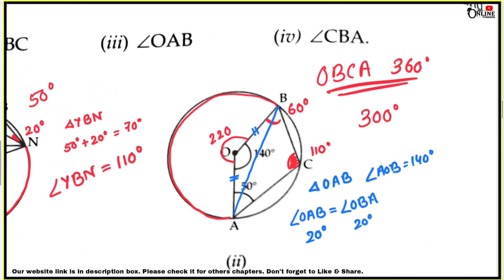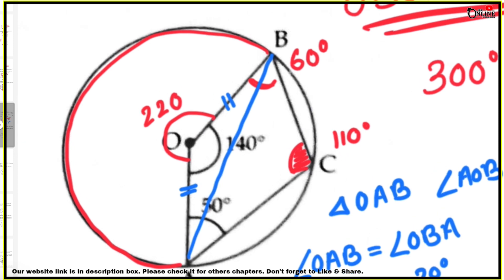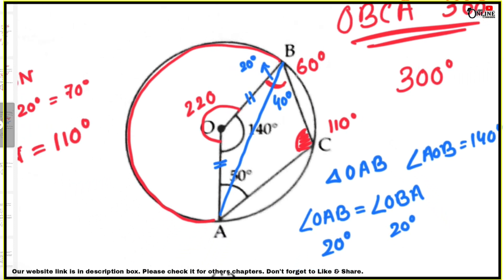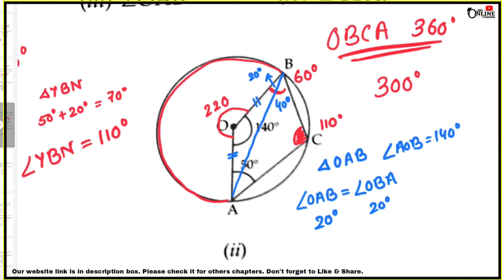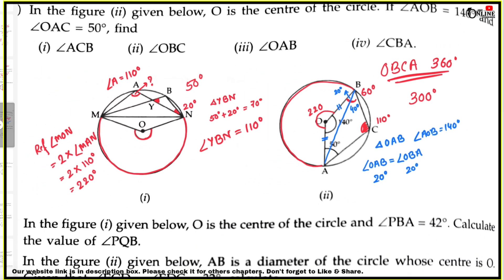The angle at B was 60 degrees. The portion OAB is an isosceles triangle. Since angle OBC was 60 and angle OAC was 50, the remaining angle CBA equals 60 minus 20, which gives 40 degrees. So angle CBA equals 40 degrees.